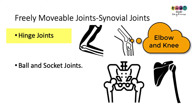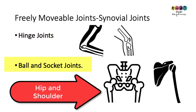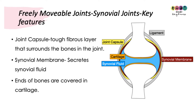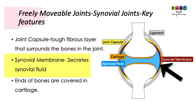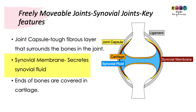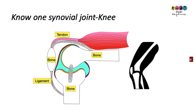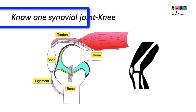Freely movable joints are also known as synovial joints. Specific examples are hinge joints, for example your elbow and your knee, and ball and socket joints, for example your hip and your shoulder. A synovial joint has some key features: it has a joint capsule, which is a tough fibrous layer that surrounds the bones in the joint. Then you have the synovial membrane just inside that, and it secretes synovial fluid. The ends of the bones in a synovial joint are always covered in cartilage.